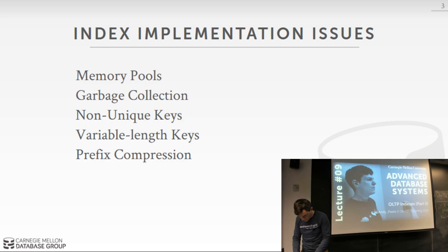We need to talk about design decisions we'll have to make about how we're actually going to implement our index. It's one thing to show diagrams, but when it comes time to actually build the index, there are difficult things to worry about. We'll talk about memory pools or object pools, garbage collection, handling non-unique keys, variable-length keys, and prefix compression. These are applicable to general-purpose trees like a B+ tree, a BW tree, or a skip list. Some of these are not applicable to the radix tree — the ART index — because how they store their keys is completely different.